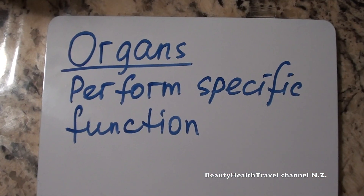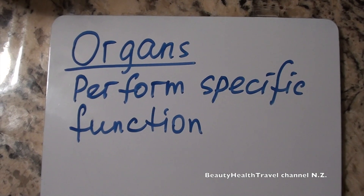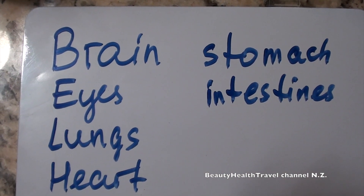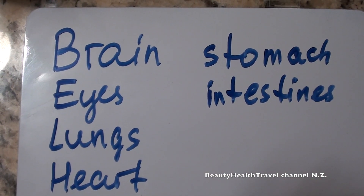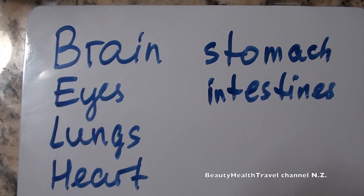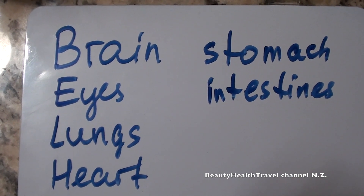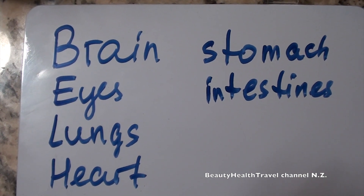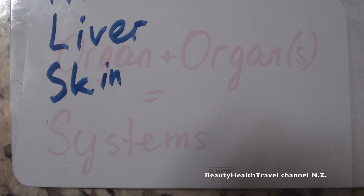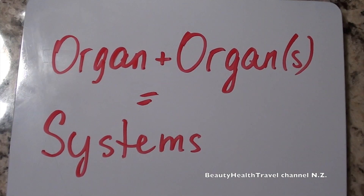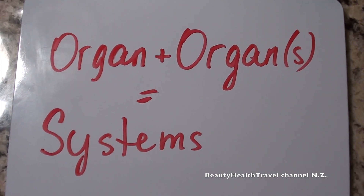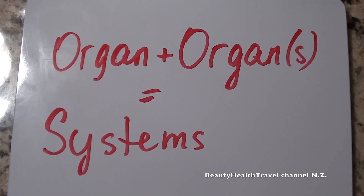Organs perform a specific function. Examples of organs are brain, eyes, lungs, heart, stomach, intestines, liver, and skin. Organs together perform a specific function and make systems.